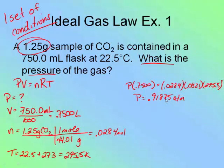But obviously, that's not my final answer, because I have to put in the correct number of sig figs. So I go back to my original givens. I have three sig figs in the mass. I have four sig figs in the volume. And of course, I don't look at the degrees Celsius for sig figs. I look at the Kelvins, which are 295.5, which is four sig figs. So my fewest number of sig figs is the mass, which is three. So this becomes 0.919 atmospheres.